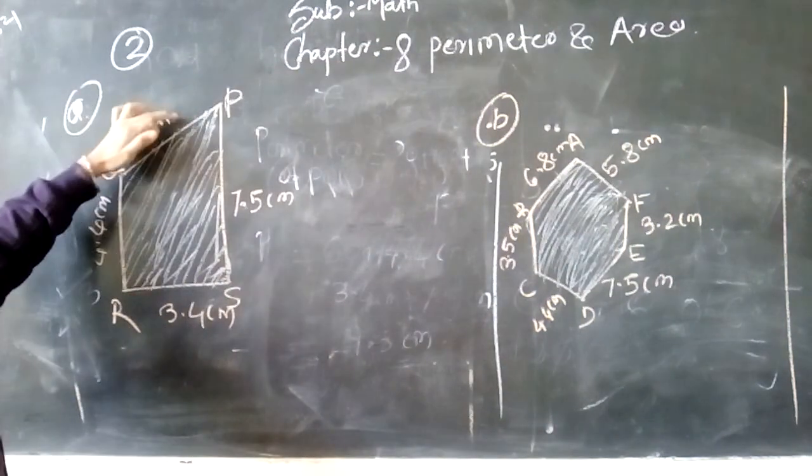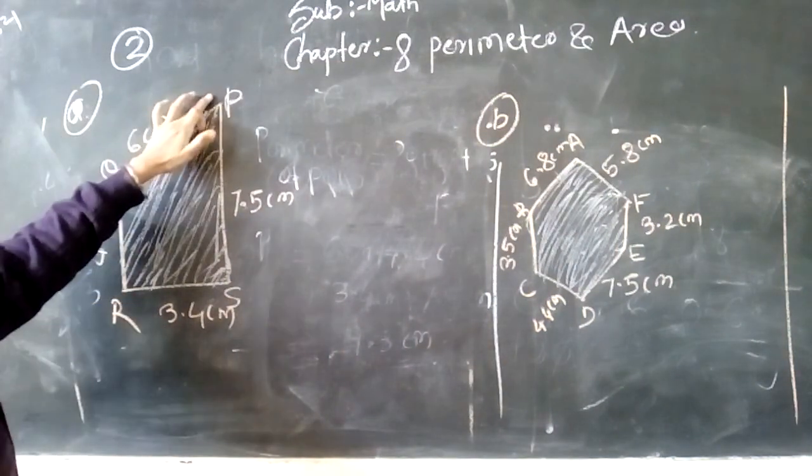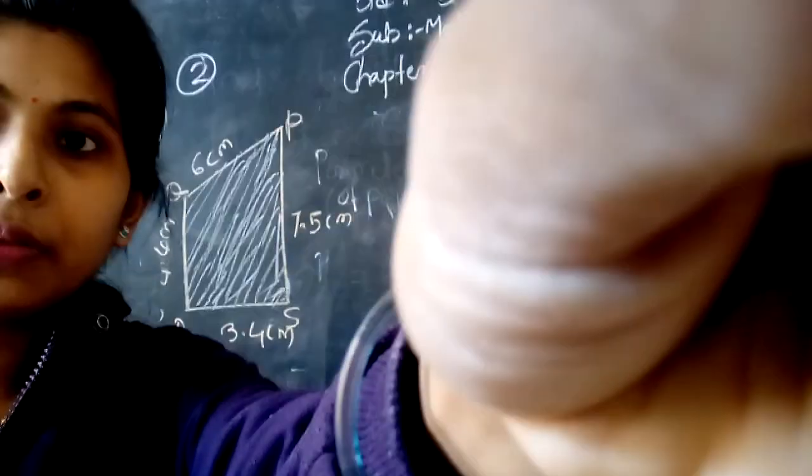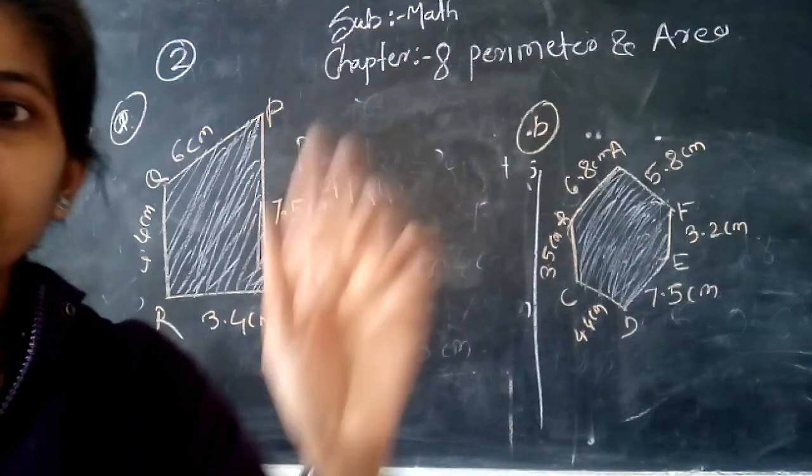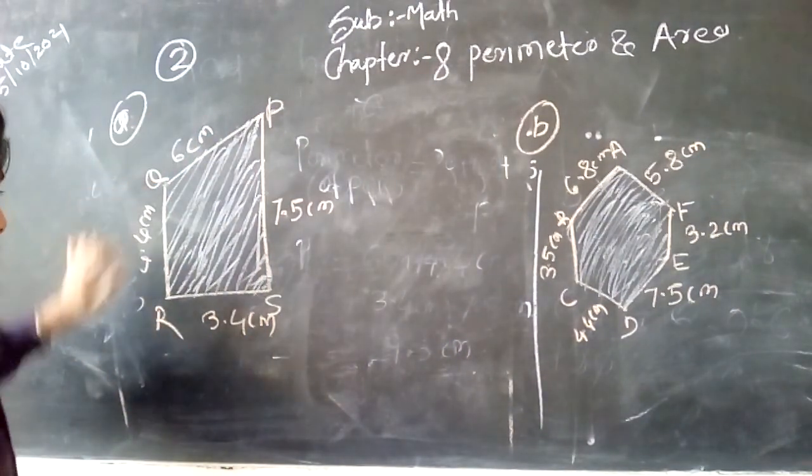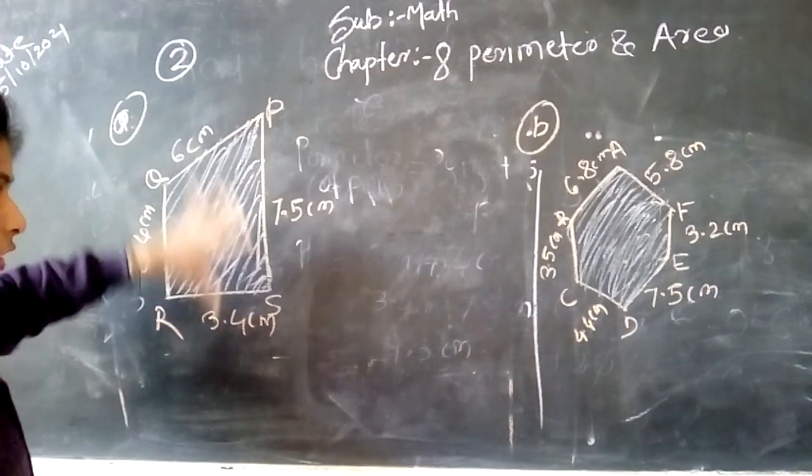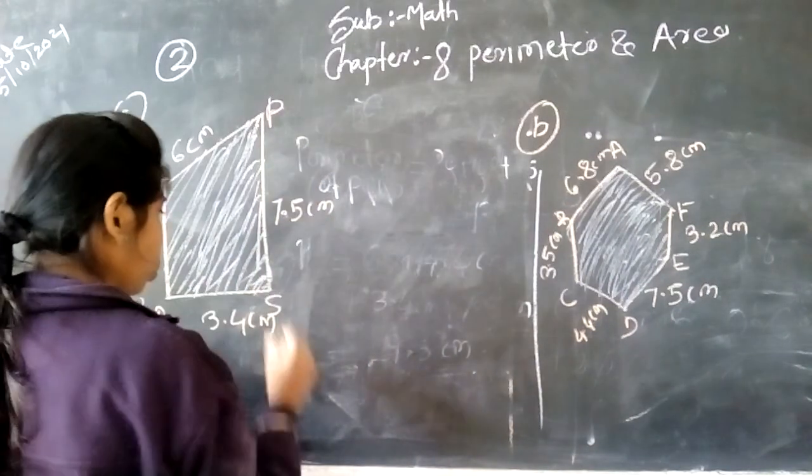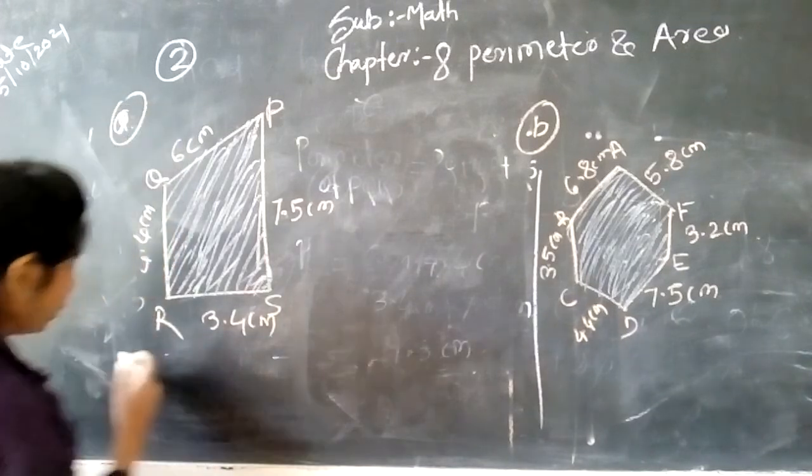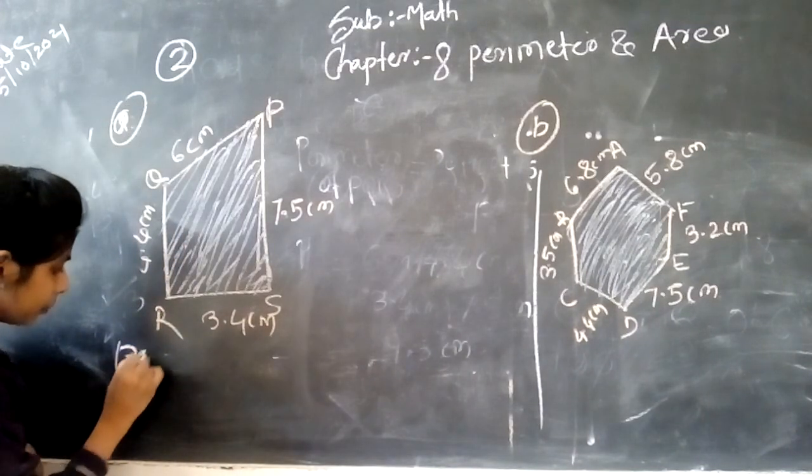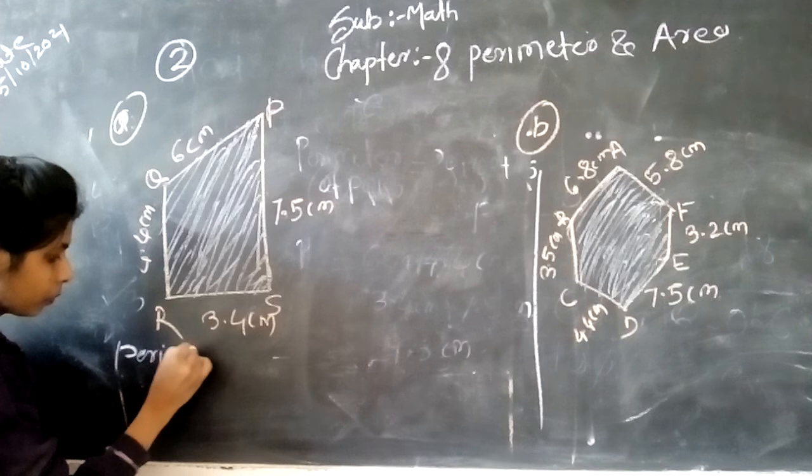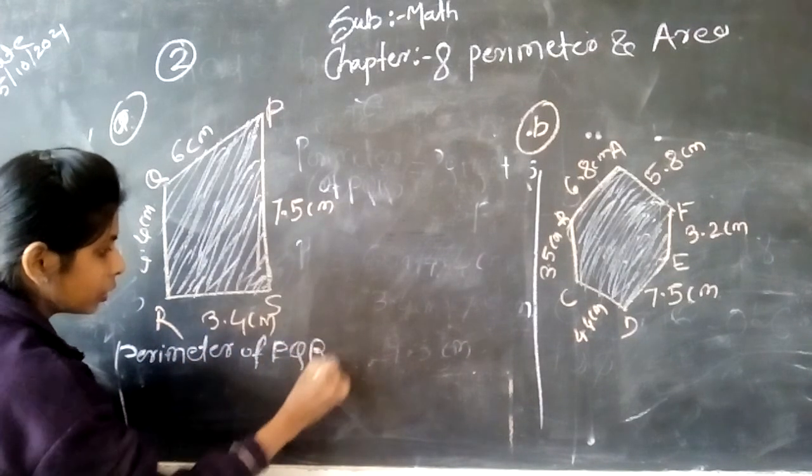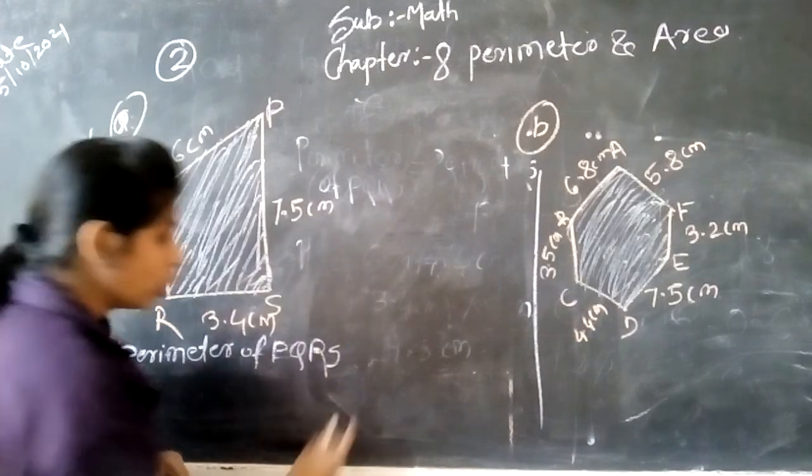What is this diagram? It is called PQRS. So this is how we can do it. Perimeter, we can use the formula. Perimeter of PQRS, okay.